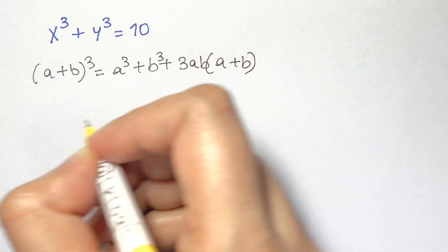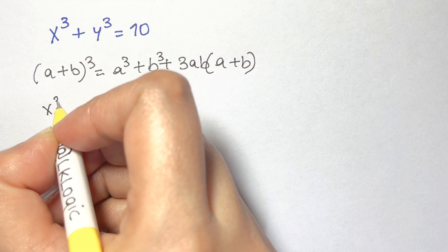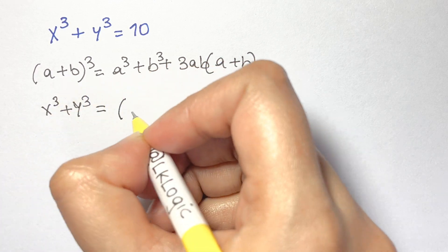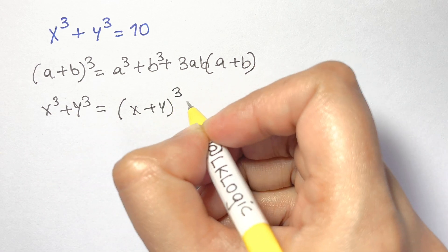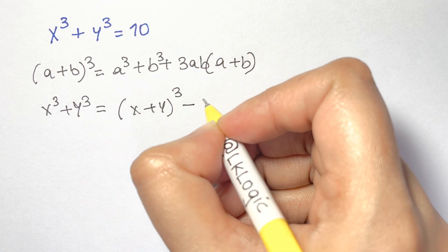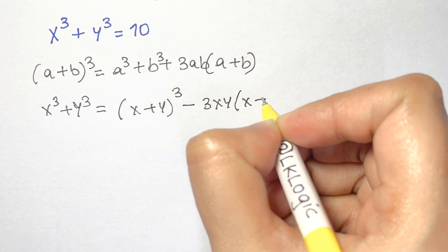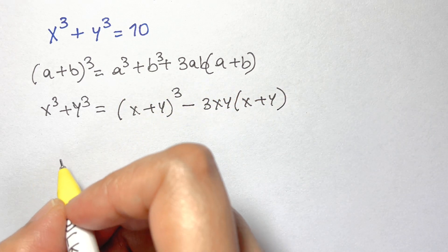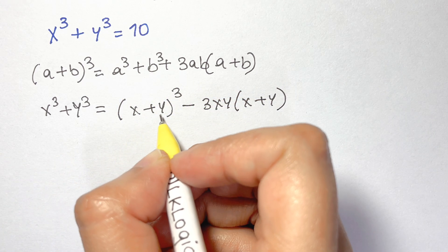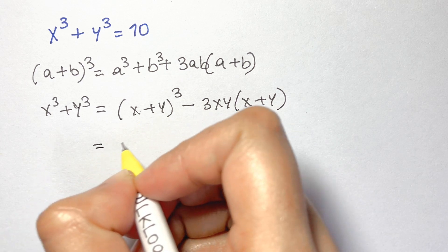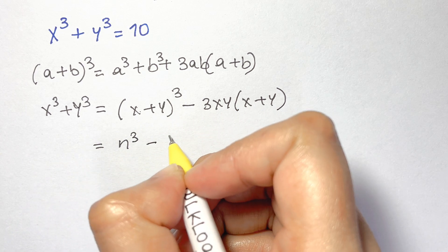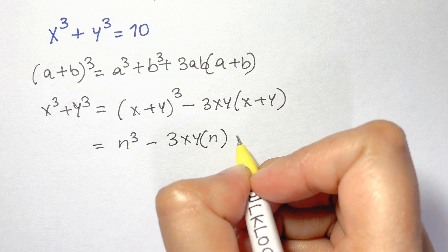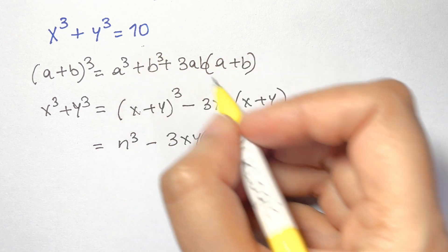Rearranging, x cubed plus y cubed equals x plus y the whole cubed minus 3xy times x plus y. Substituting x plus y equals n, this becomes n cubed minus 3xy times n, which equals 10 as given.